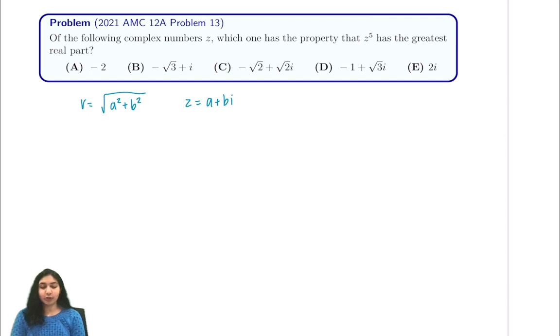The reason why we want to convert everything to polar form with r and cosine and sine is because of de Moivre's theorem, which tells us that for some number r times the cosine of x plus i sine x, this number to the power of n is equal to r to the n times cosine of nx plus i sine of nx.